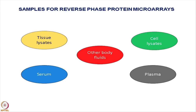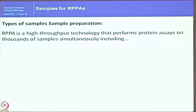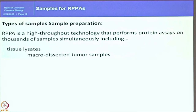First, regarding samples: there is no limitation — any sample can be analyzed by RPPA, or any sample which can be analyzed by western blot can be analyzed in RPPA. It is a high-throughput technology that performs protein assays on thousands of samples simultaneously, including tissue lysates which have micro-dissected tumor samples where you will have at least microgram to milligram levels of protein.